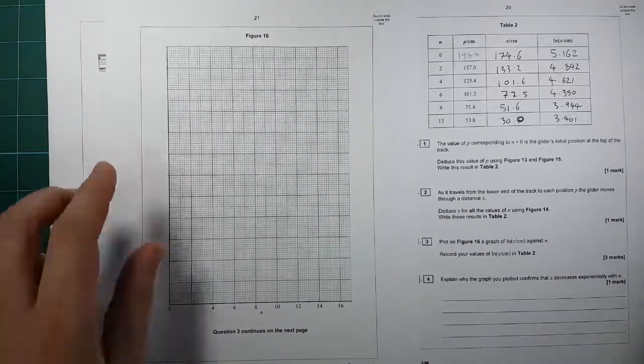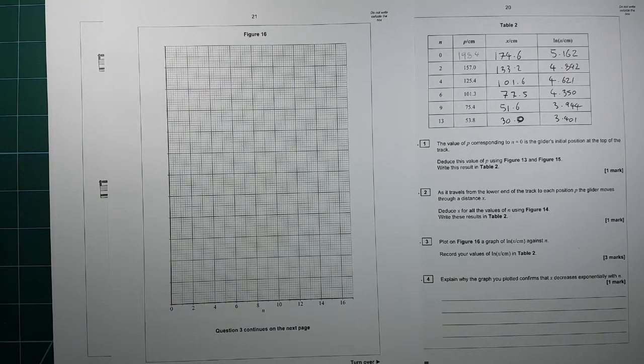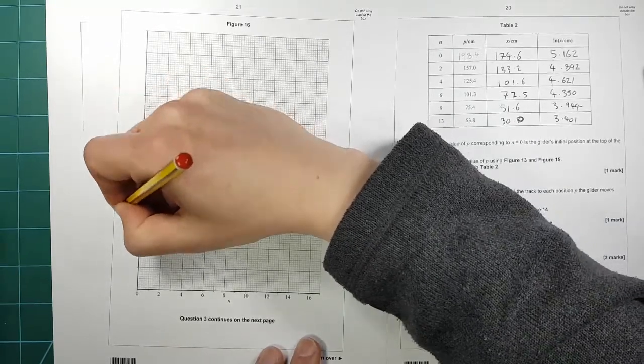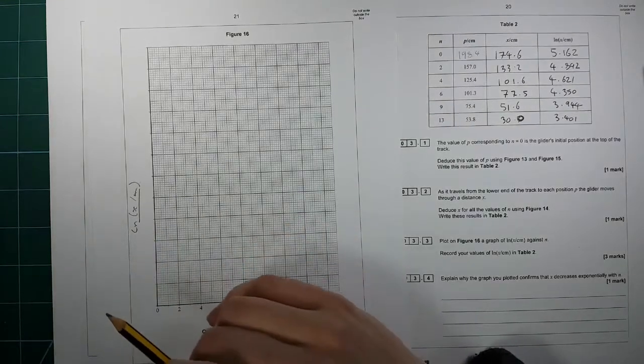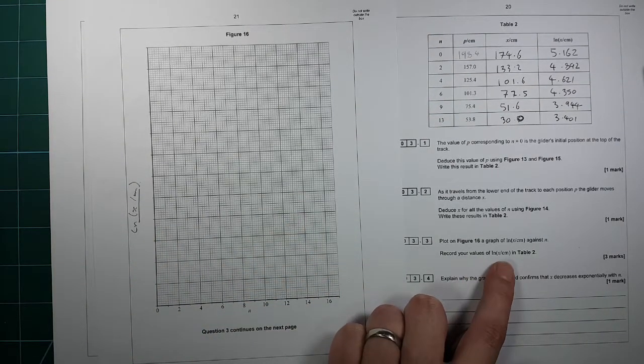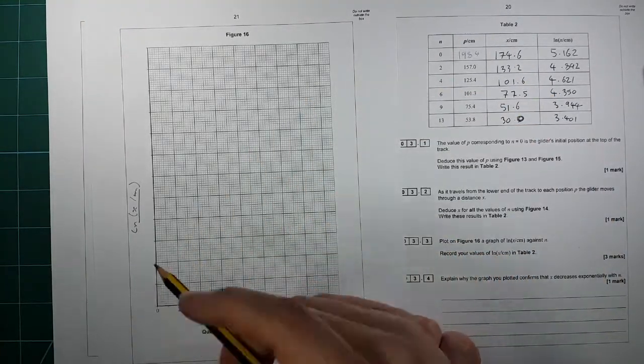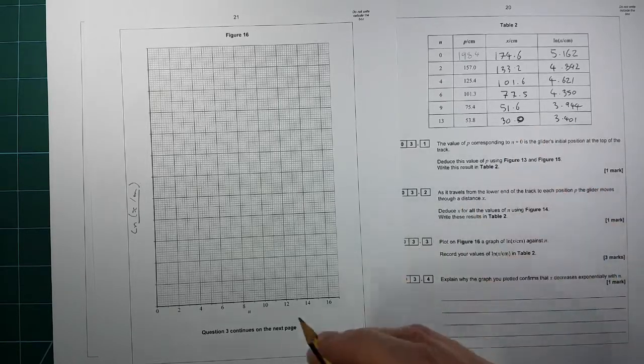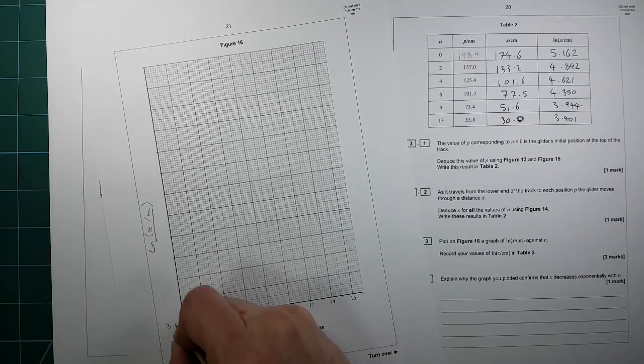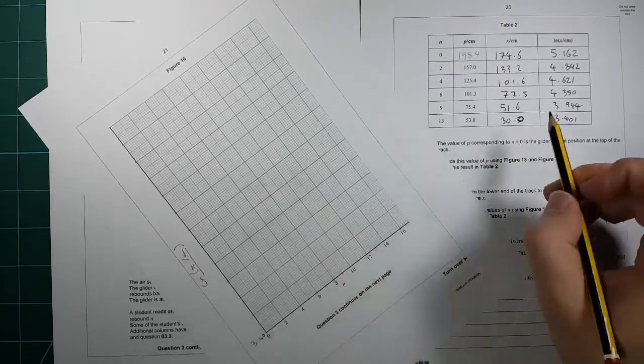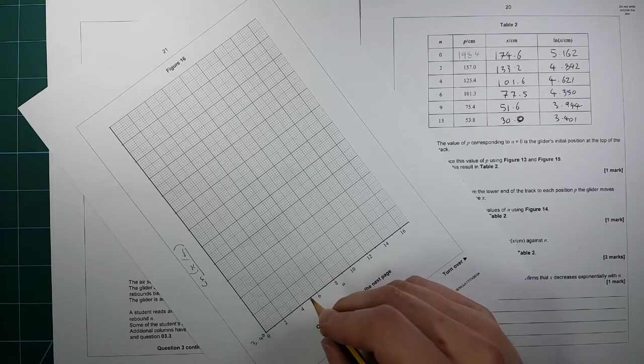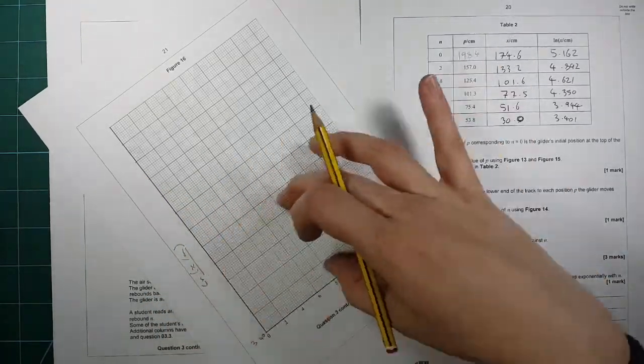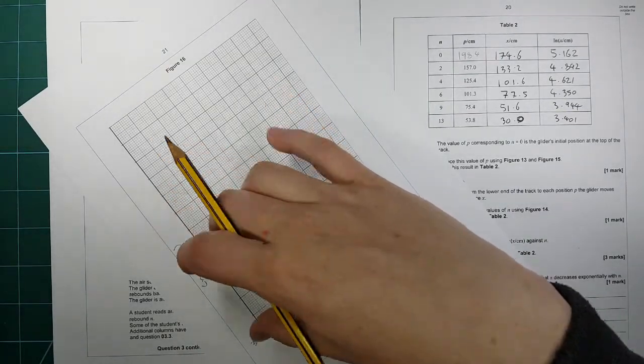Now we have to plot these on this, and they've told us what n is, so we still need to do ln of x in centimeters to go along this axis here. Make sure you label your axis please. Record your values in table 2, and plot the graph. So we need to make it so that we've got some nice values here. So what's the lowest one? The lowest one is 3.4. You need to make sure the whole thing fills decent portion of the graph paper.